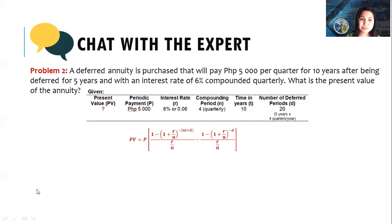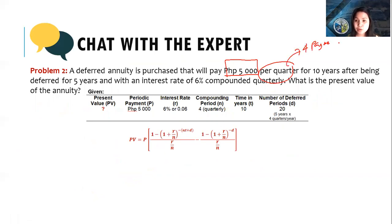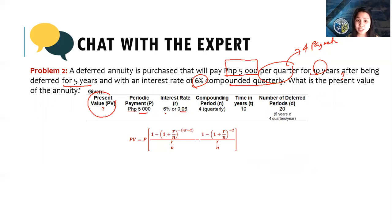Let's go to problem number two. A deferred annuity is purchased that will pay $5,000 per quarter — so four payments per year — for 10 years, after being deferred for five years, with an interest rate of 6% compounded quarterly. What is the present value of the annuity? We are looking for the present value; periodic payment is $5,000; interest rate is 6%; since it's compounded quarterly, N = 4; T = 10. The payment is deferred for five years and there are four payments per year, so 5 times 4 gives us 20 deferred periods.